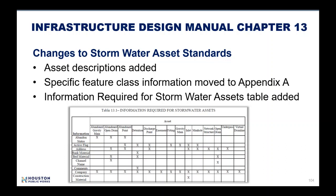For changes to the utility sections: each utility has its own subsection now under the newly created asset-specific sections. For stormwater, a section with asset descriptions was added to define all stormwater assets. All specific feature class information was moved from stormwater to Appendix A within the new Geospatial Data Deliverables Properties Guide. Chapter 13 primarily contains an information-required-for-stormwater-assets table, matching similar tables already in Chapter 13 for water, wastewater, and geotechnical/environmental utilities.